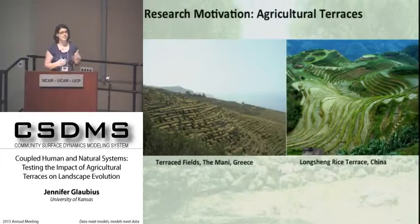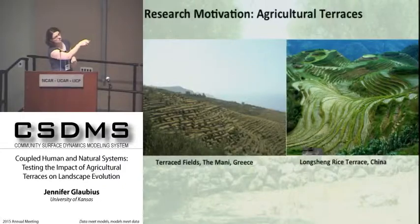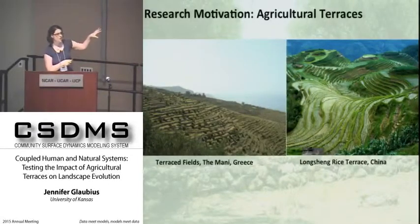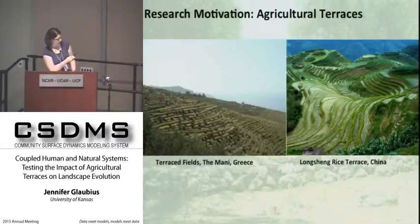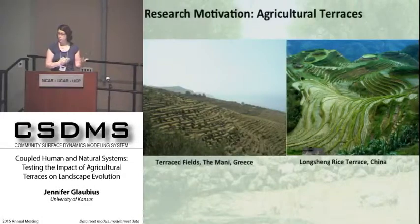These are surfaces constructed to improve agricultural production. They share a flat tread surface where cultivation actually occurs, and they're supported by a riser, which in many cases may just be an earthen bank, or they may be stone walls. They're constructed to improve agricultural production and reshape the landscape. They're found around the world, not just China and Greece, and they've been constructed for thousands of years. There are examples in Greece constructed at least 4,000 years ago, and they're still constructed today, although now sometimes with bulldozers.